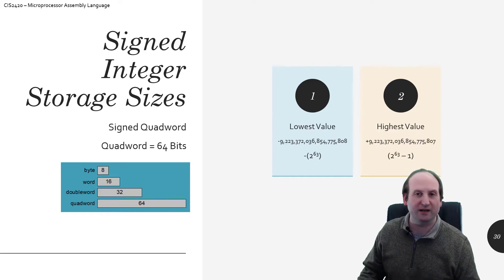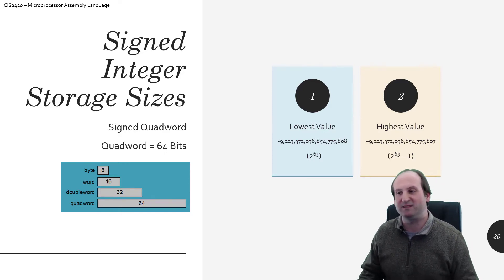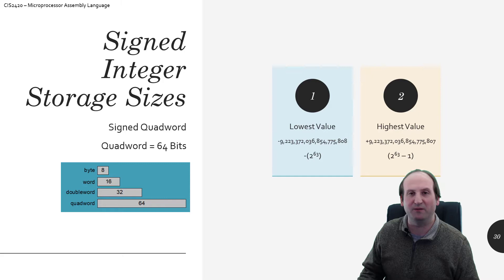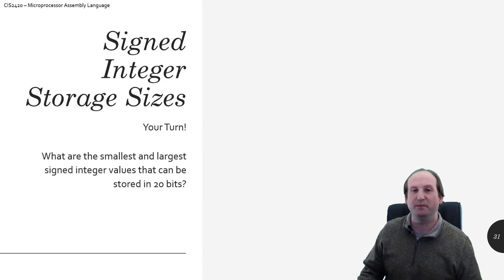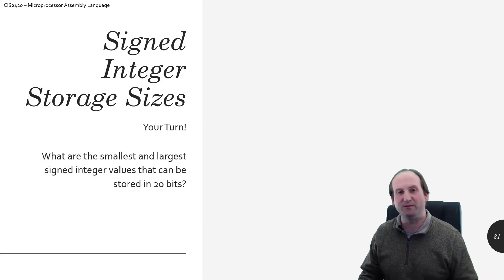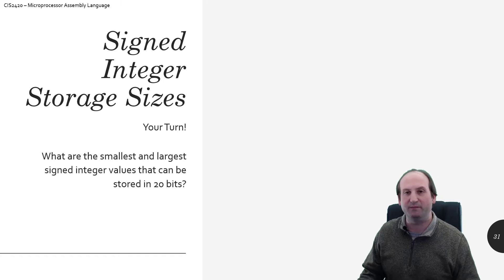The final true data type that we care about in this course, the quad word, 64 bits of storage. As you can see here, a signed quad word is negative 9 quintillion, I think that's the word for it, and all the way up to positive 9 quintillion. And, of course, that means it's negative 2 to the 63rd power to positive 2 to the 63rd power minus 1. So did you see the pattern as we were progressing from 8 bits to 16 and all the way up to 64?